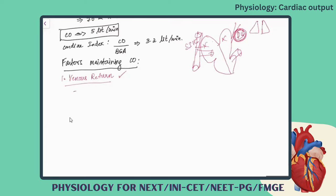The venous return is maintained by — the first one is intrathoracic pressure. As the name suggests, where will you find this pressure? In the pleural or intrathoracic space. It is the pressure between the pleural space, which is also called the intrathoracic space. The pleura is the outer covering of the lungs; you have two layers — visceral and parietal.